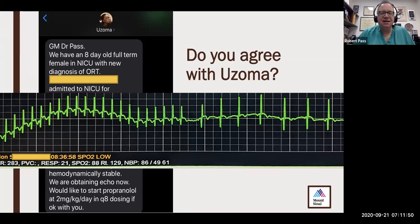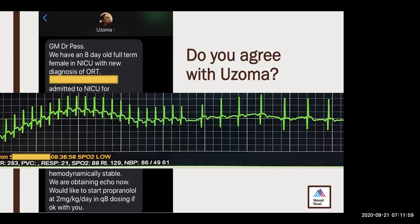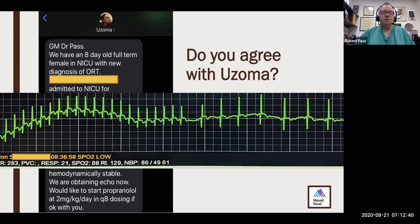This is the tracing Dr. Obiaka provided. It looks narrow complex, heart rate 300, and then it breaks towards the end of the page. The QRS complex looks similar throughout. In some beats you can see P waves, although it's hard to tell on the telly. I would say it could be ORT and I would agree with starting propranolol. Can we tell from this tracing if this is truly ORT or AVNRT? The first answer is no, we can't. We can pretty much rule out atrial flutter.